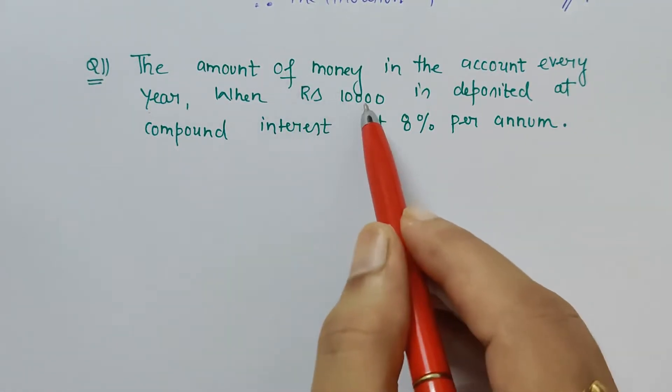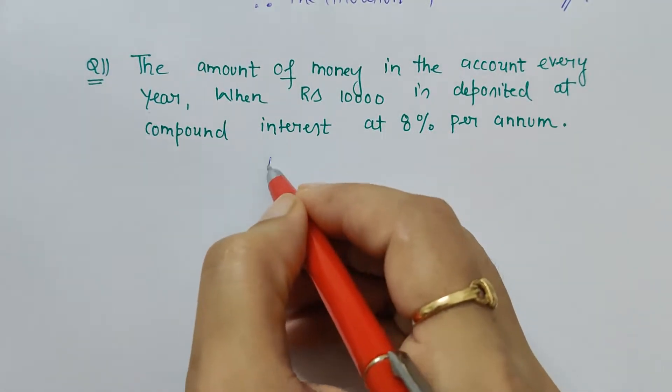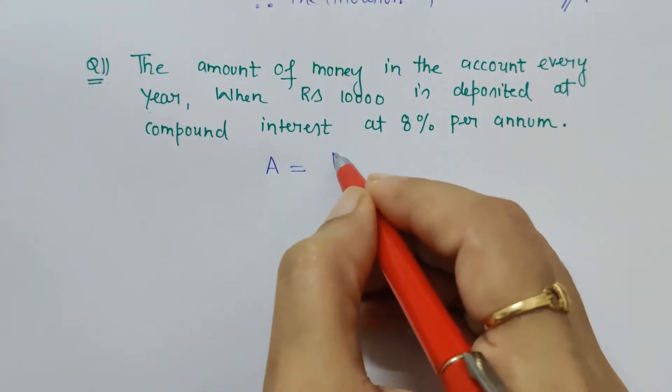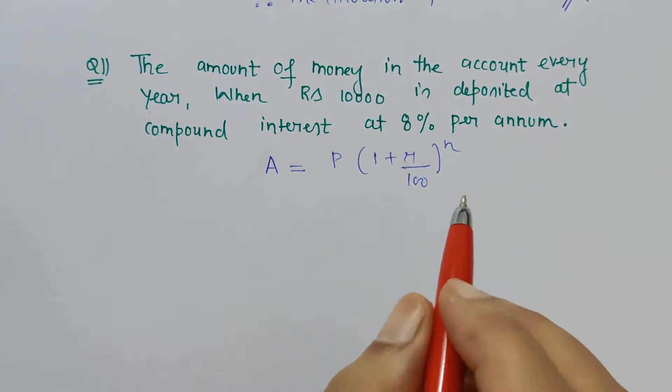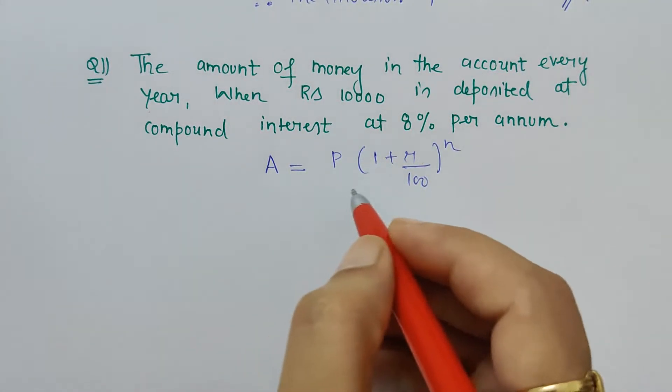So when we are talking about amount, principal, and rate of interest, which formula comes to our mind? A = P(1 + r/100)^n. Already studying it—it's standard. So here, for the first year,